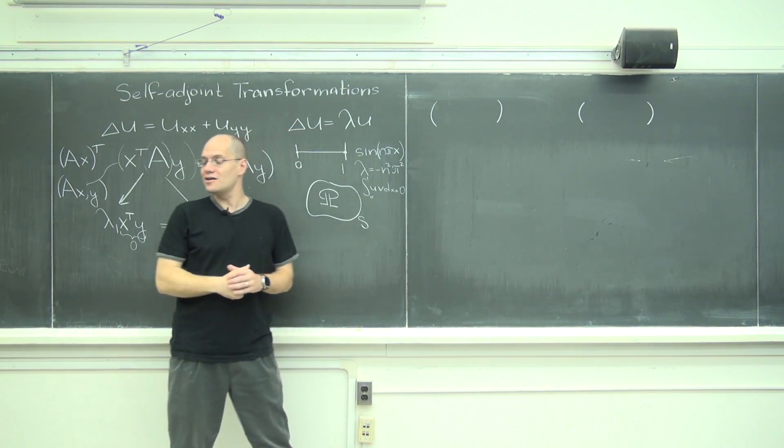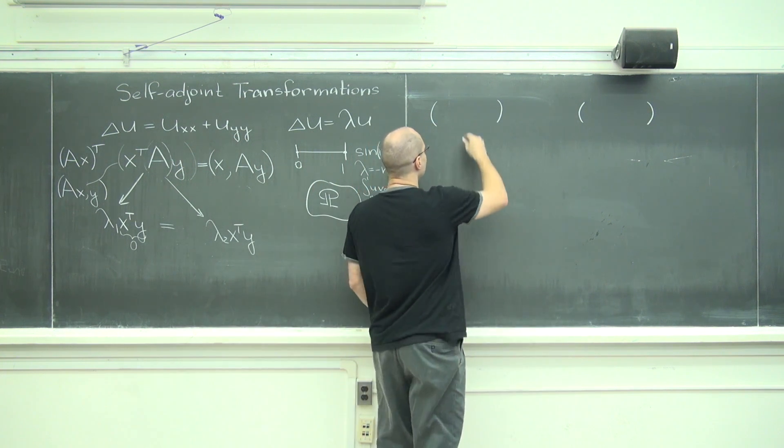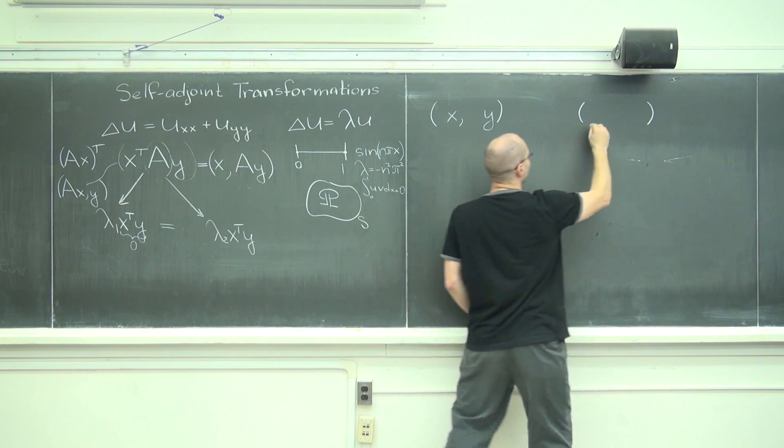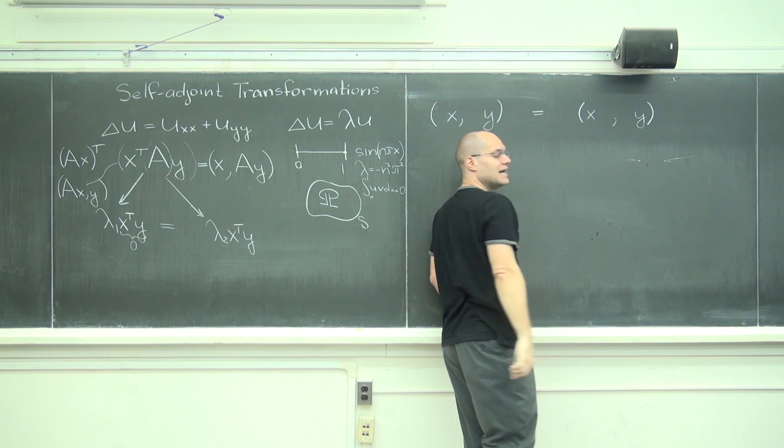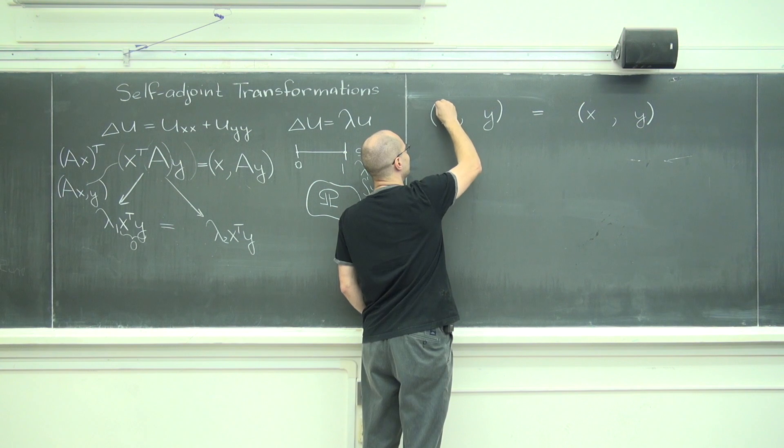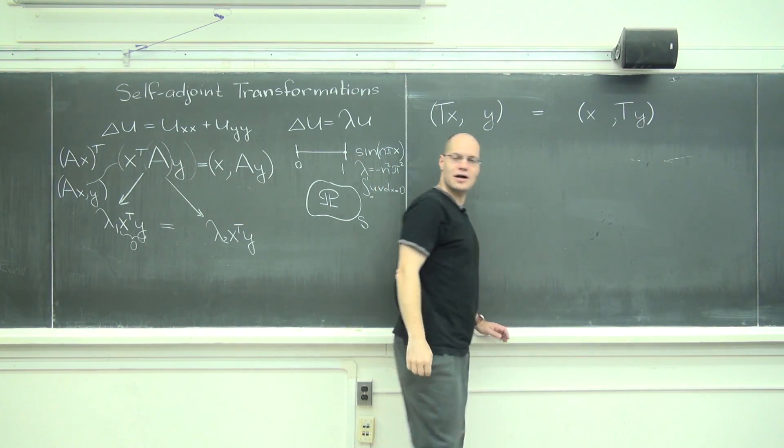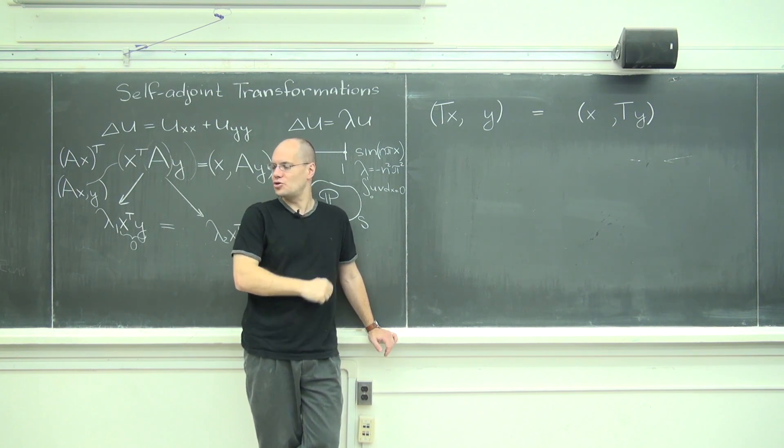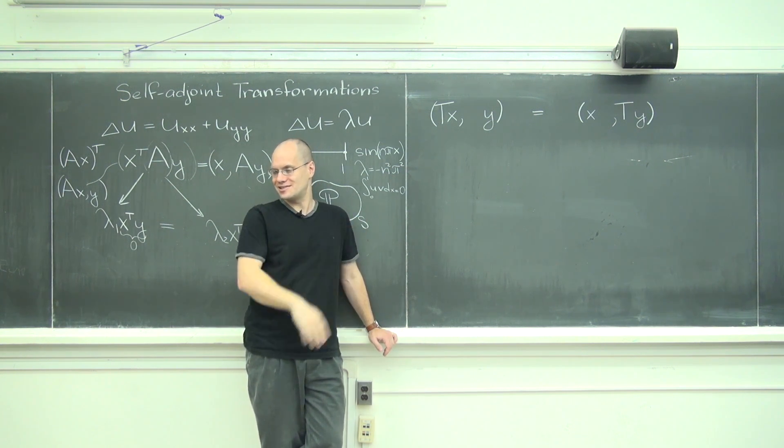So if you have an inner product and some transformation, let me call it T, and if you have x and you have y, and if it doesn't matter whether you apply it to x or whether you apply it to y prior to the dot product, then the transformation T is called self-adjoint. From this I can talk about what the adjoint is but we can skip that.